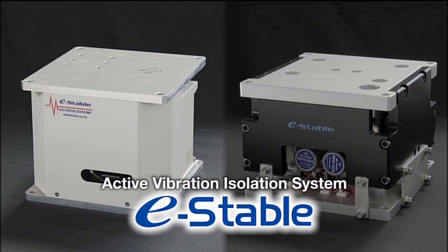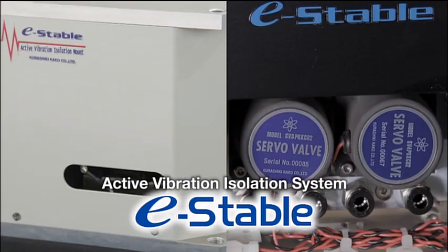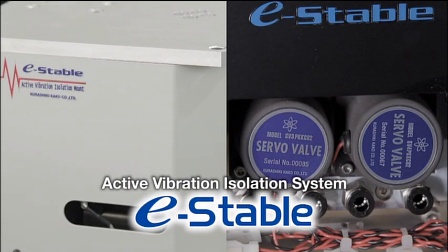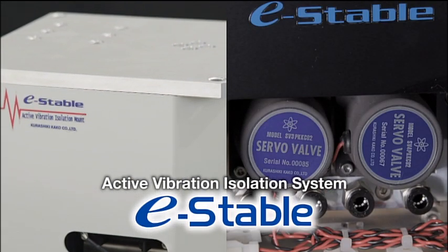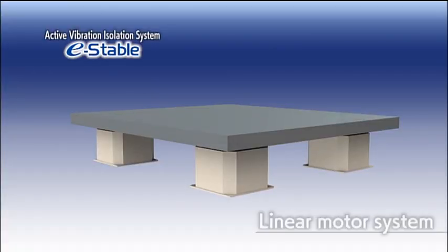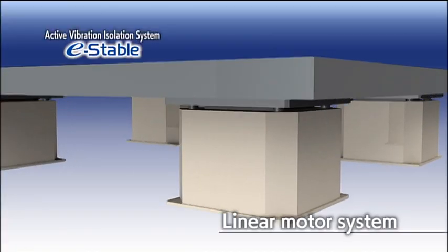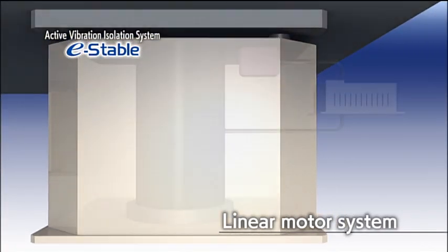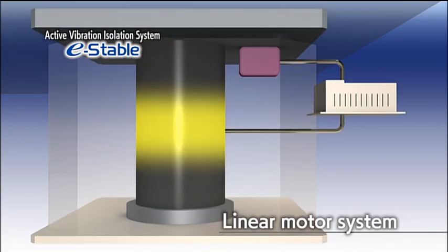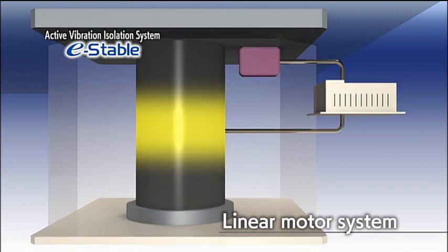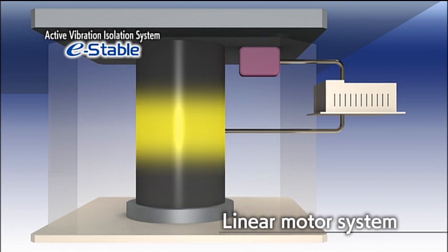Active vibration isolation system: e-stable. The e-stable uses linear motors and servo valves for active operation. Linear motor systems are effective up to the higher frequency ranges and consume very little air. They have excellent vibration isolation and are suitable for equipment requiring high resolution, such as laser microscopes or electron microscopes.